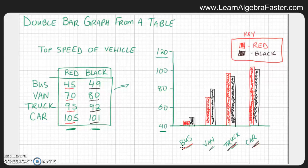So check that out. So we just stepped through the categories. We did bus first, then van, then truck, then car. We did it in the same order as is shown here. And we started off with the column of red. And we did that first. And we made that in one set of bars. And then we came back and did the second set of bars for the black vehicles. And this is what our bar graph looks like.